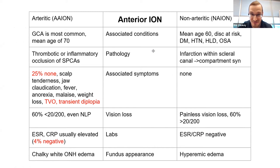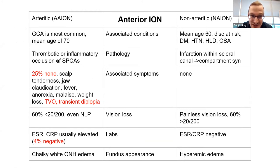Comparing arteritic versus non-arteritic AION: their symptoms are sometimes minimal, but transient diplopia and transient visual obscurations are important tip-offs that should come up in your review of systems.